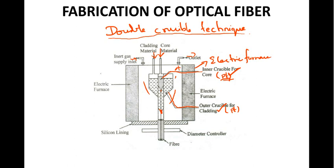There is an inert gas inlet, and the gas will move towards the outlet, so there is a flow of this inert gas. There is a provision for the core material and a provision for the cladding material. At the bottom you have a silicon lining to handle the high temperature.